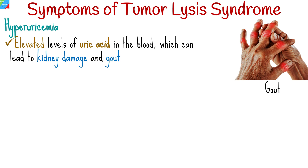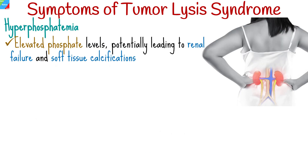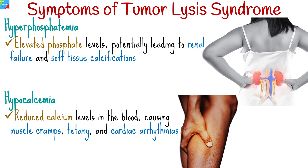Common symptoms include hyperuricemia — elevated levels of uric acid in the blood — which can lead to kidney damage and gout; increased levels of potassium in the blood, posing a risk of cardiac arrhythmias; elevated phosphate levels, potentially leading to renal failure and soft tissue calcifications; and reduced calcium levels in the blood, causing muscle cramps, tetany, and cardiac arrhythmias.